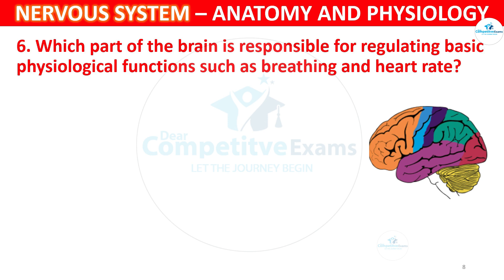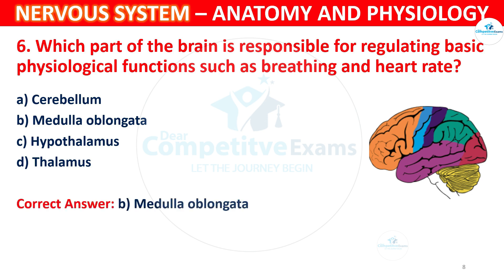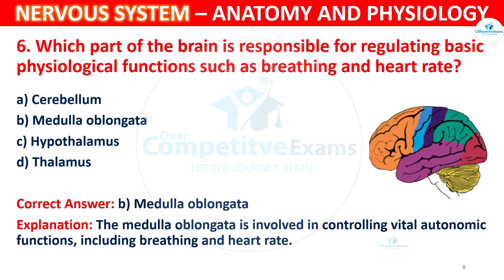Question 6 (continued): Which part of the brain is responsible for regulating basic physiological functions such as breathing and heart rate? Options: A) Cerebellum, B) Medulla oblongata, C) Hypothalamus, D) Thalamus. The correct answer is B, Medulla oblongata. The medulla oblongata is involved in controlling vital autonomic functions including breathing and heart rate.